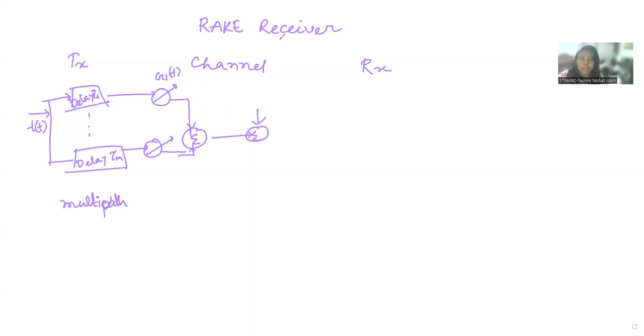So here's two things are considered. One is the additive noise, which is the Gaussian noise. And the other is the multiple access interference.